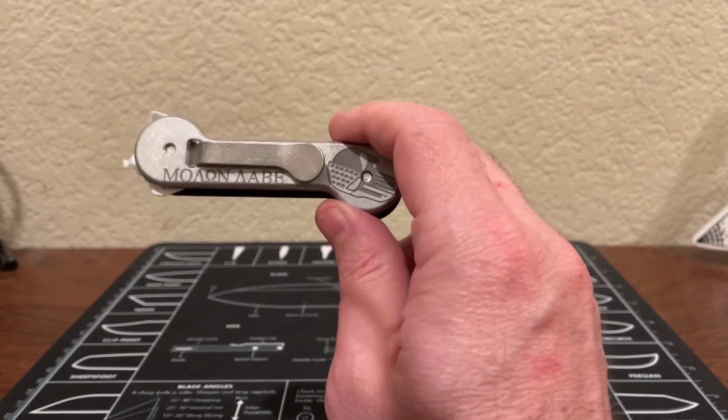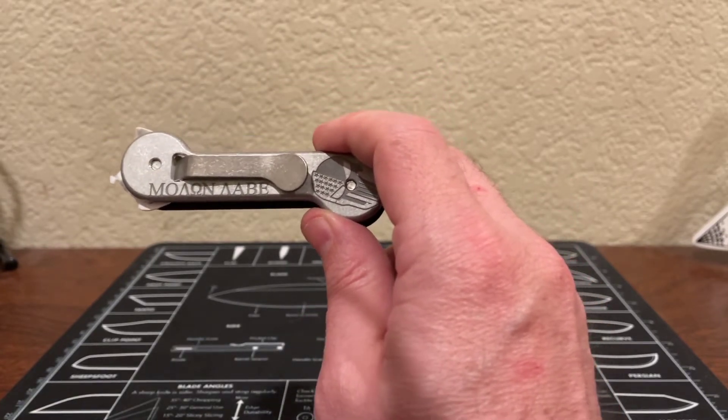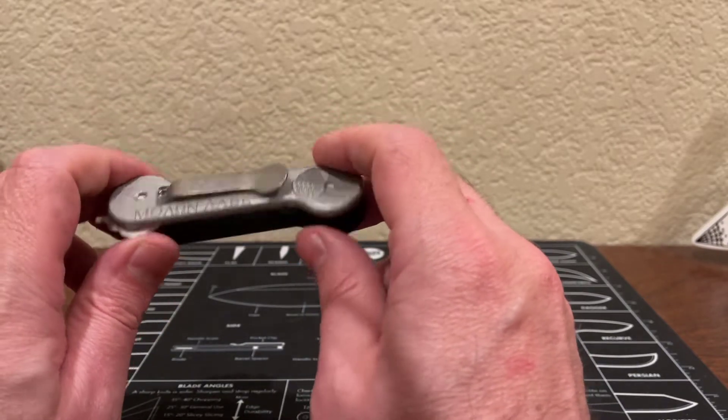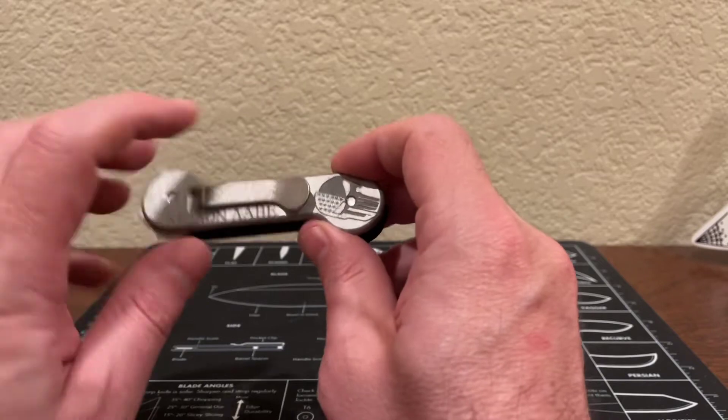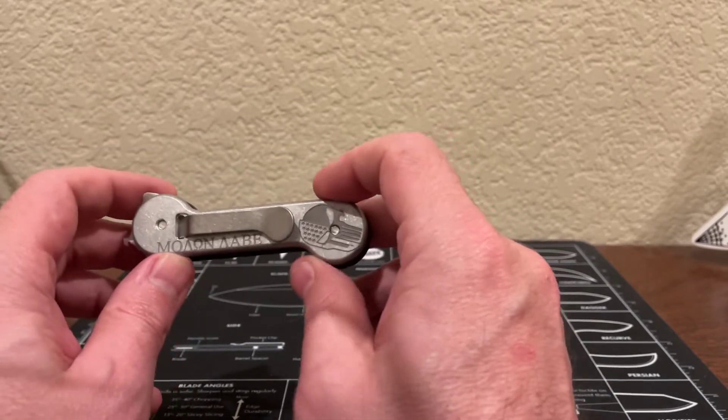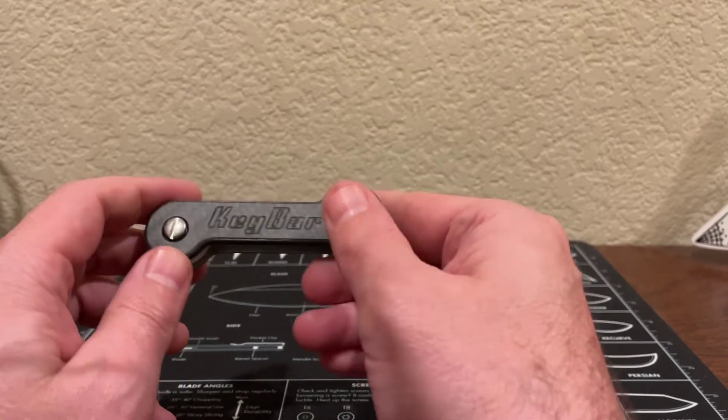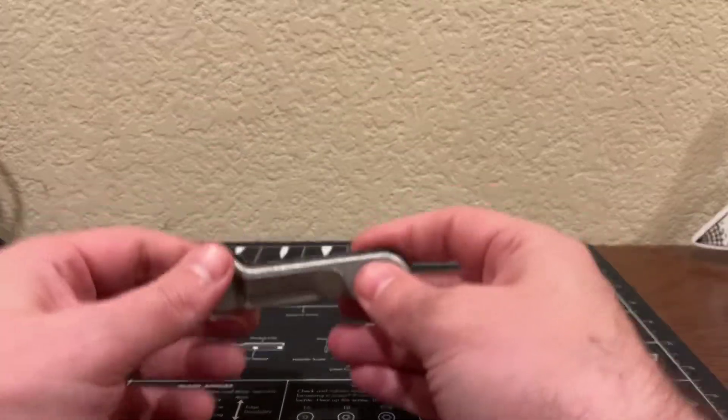So let's go ahead with the specs on this. The hardware is heat treated and the pocket clip is made of stainless steel. This side is made of aluminum, this side is made of carbon fiber, so it's really not that heavy at all. I think it's about 1.9 ounces.